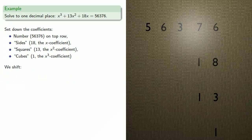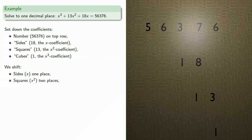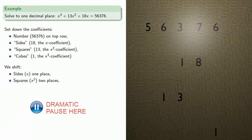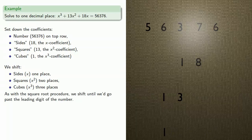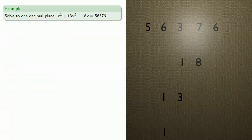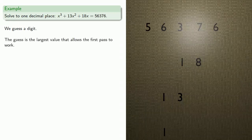And we'll shift: the sides move one place, the squares move two places, and the cubes move three places. As with the square root procedure, we shift until we go past the leading digit of the number, and then we'll guess a digit — the largest value that allows the first pass to work.